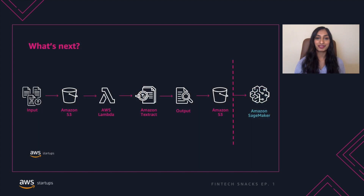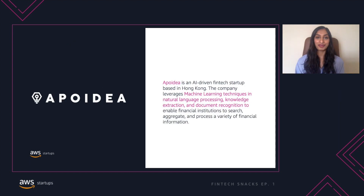From here, we can take the data extracted using Textract and process it using machine learning models. In the next video, we'll explore how to process loan documents using Amazon SageMaker. Join my colleague Arnav Khara as he talks about how to build a loan processing model on Amazon SageMaker. Now let's hear from one of our fintech startup customers that's using Textract.